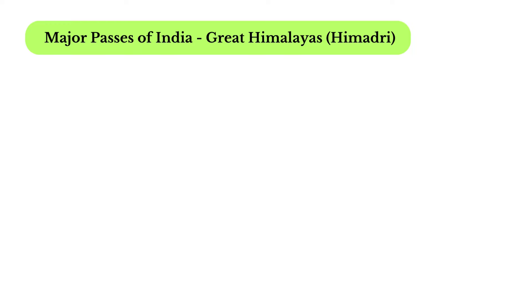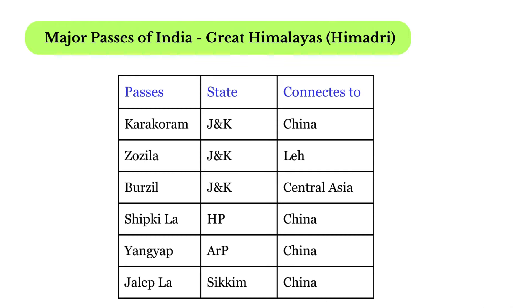Major passes of the Great Himalayas: Karakoram Pass is in Jammu and Kashmir and connects to China; Zojila is in Jammu and Kashmir and connects to Leh; Bozil is also in Jammu and Kashmir and connects to Central Asia; Shipki La is in Himachal Pradesh and connects to China; Yangyap is in Arunachal Pradesh and connects to China; and Jelep La is in Sikkim and connects to China.